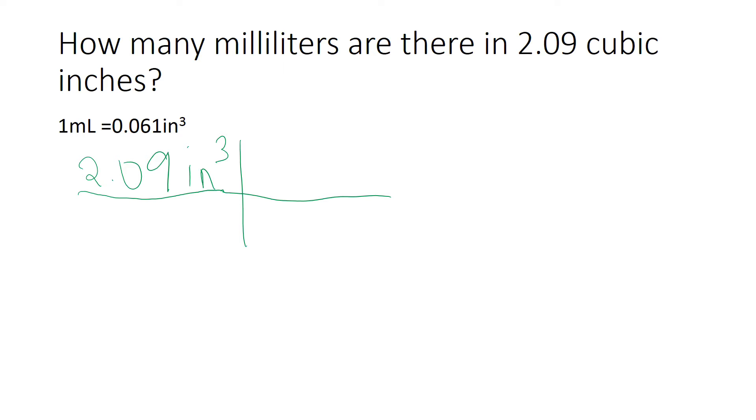Because we want to get rid of cubic inches, we're going to put that on the bottom. So 0.061 inches cubed, so that our units cancel, is equivalent to 1 milliliter. We do want our answer in milliliters at the end.